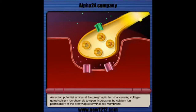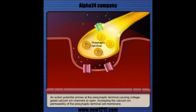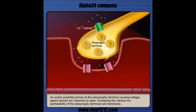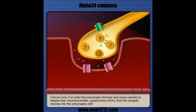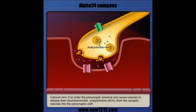An action potential arrives at the presynaptic terminal causing voltage-gated calcium ion channels to open, increasing the calcium ion permeability of the presynaptic terminal cell membrane. Calcium ions enter the presynaptic terminal and cause vesicles to release their neurotransmitter acetylcholine from the synaptic vesicles into the synaptic cleft.